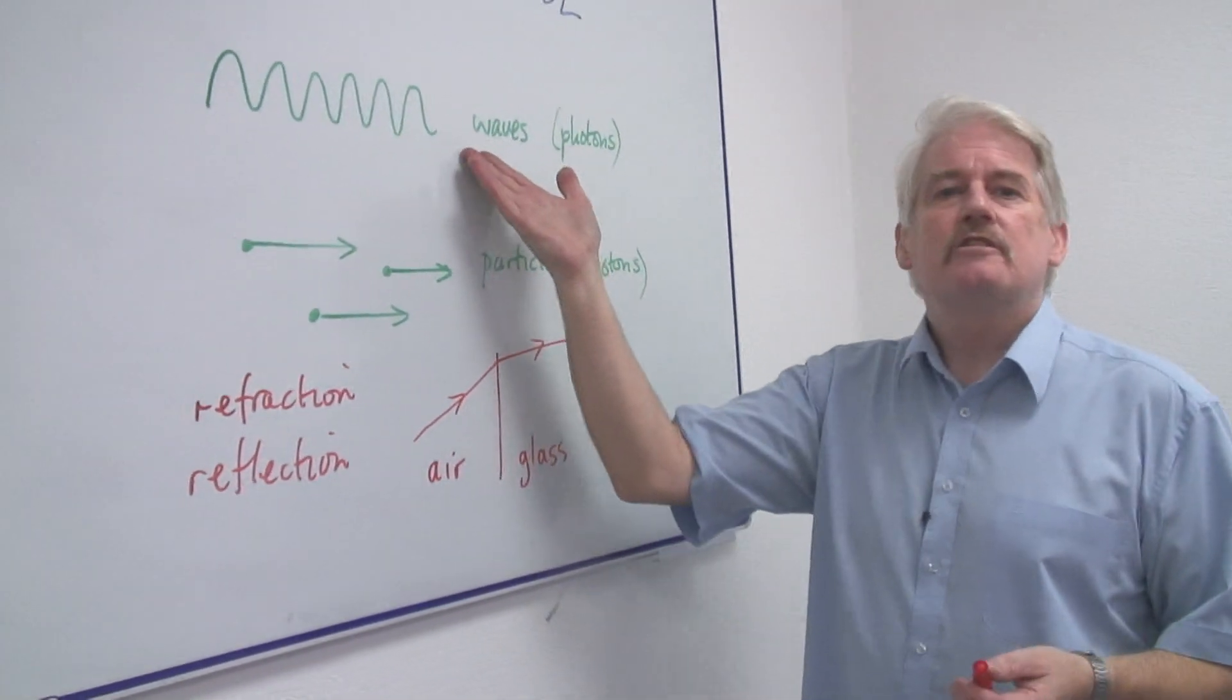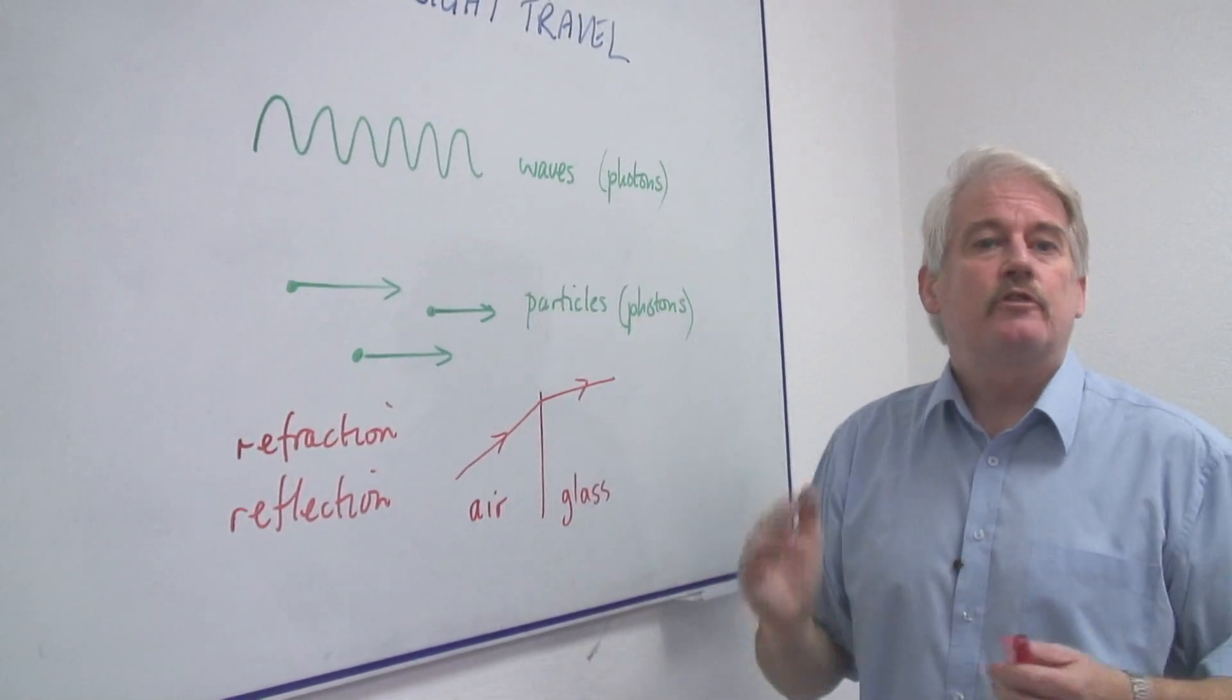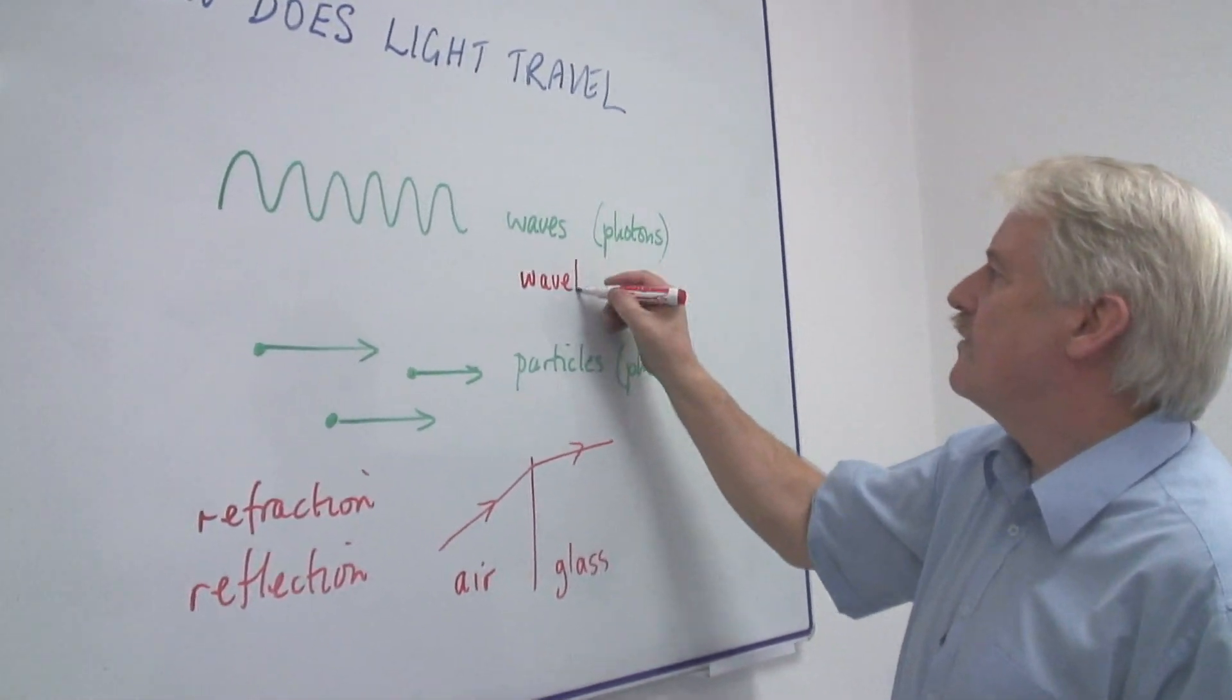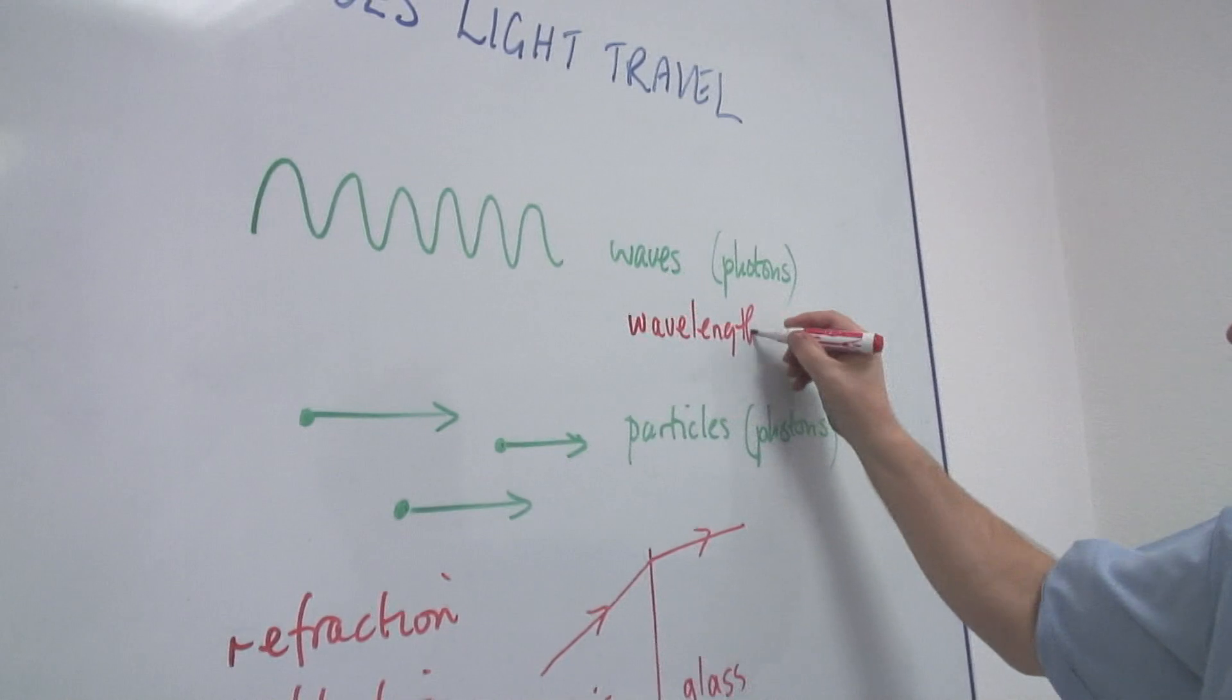But you can explain in terms of waves as having different wavelengths. So we would talk about the different wavelengths of light.